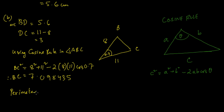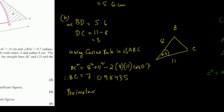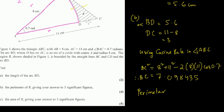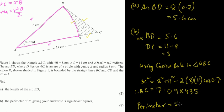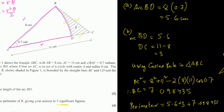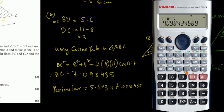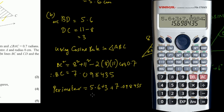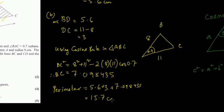The perimeter is the sum of all three sides: arc BD + DC + BC = 5.6 + 3 + 7.098435. Calculating this gives approximately 15.69, which rounded to 3 significant figures is 15.7 centimetres. The unit is very important — always include it.